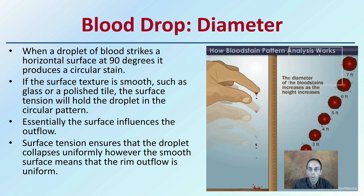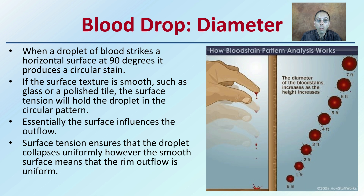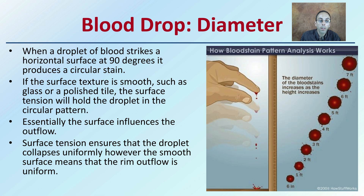Regarding the diameter of the blood drop: when a drop strikes a horizontal surface at 90 degrees, it produces a circular stain. On smooth surfaces like glass or polished tile, surface tension holds the droplet in a circular pattern and ensures it collapses uniformly, with the rim outflow also being uniform. Many factors come into play, as the surface influences the flow and movement of the droplet.